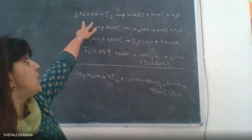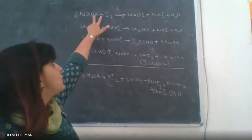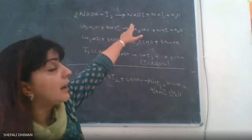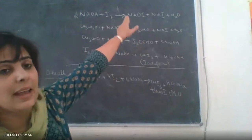When you react sodium hydroxide with iodine you have to add iodine to NaOH to form an in-situ reagent sodium hypoiodite NaOI.